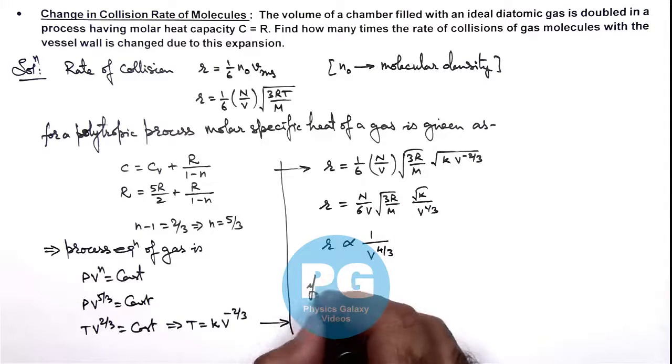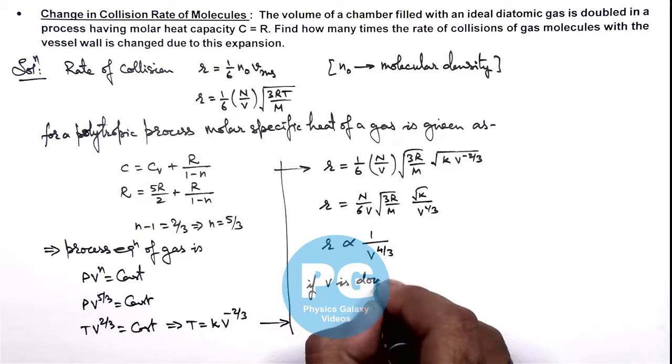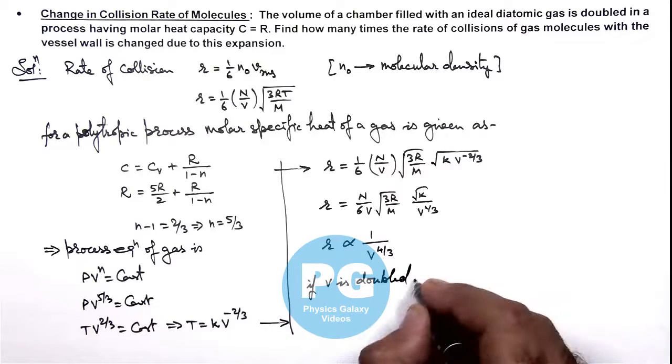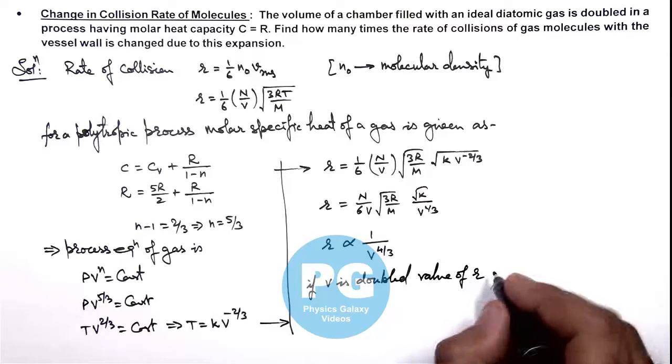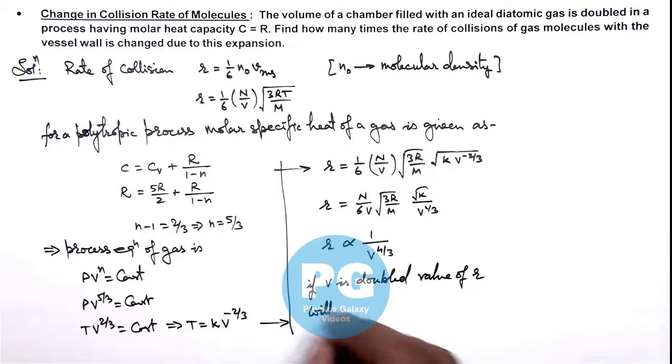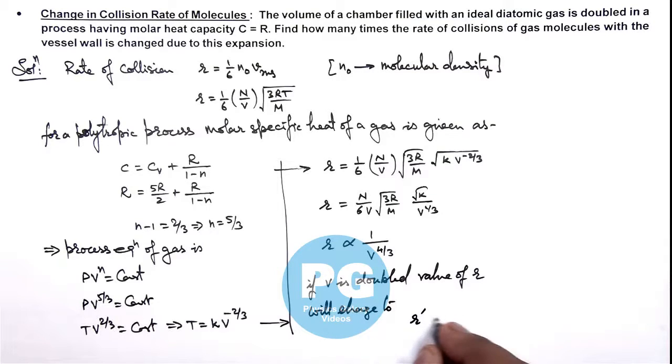v is doubled, value of r will change to, directly you can write r prime which is r divided by 2 to power 4 by 3.